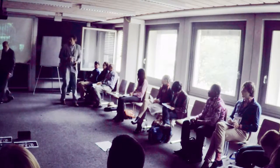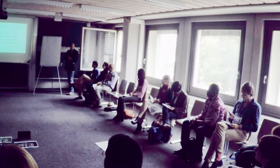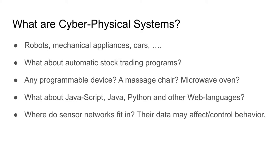I want to make sure we have a common sense of what cyber-physical systems are. Most people speak about robots — mechanical things that affect the real world. But I think we should expand our notion to include things like fast trading systems on the stock market: they take real-world information, process it, and have a real-world impact on your bank account. Any programmable device like a massage chair can qualify as a CPS. JavaScript, Java, Python, and other web languages also process information with physical-world inputs and outputs.